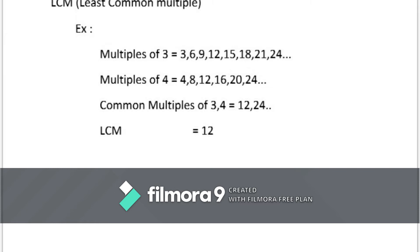For example, consider 2 numbers 3 and 4. Multiples of 3 is equal to 3, 6, 9, 12 and so on. Multiples of 4 equal to 4, 8, 12, 16, 20 and so on.